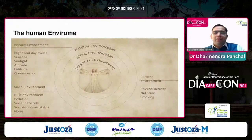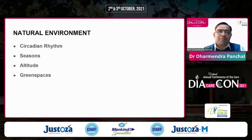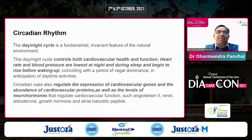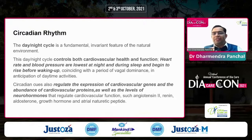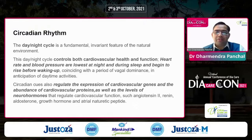These mechanisms may eventually lead to thrombosis, atherosclerosis, or alteration in cardiac structure, ending in ischemic events, arrhythmia, cardiomyopathy, or heart failure. The human environment can be divided into natural environment, social environment, and personal environment. In the natural environment we have circadian rhythm, season, altitude, and green spaces. Circadian rhythm — the day-night cycle — is a fundamental feature of the natural environment. It controls both cardiovascular health and function. Heart rate and blood pressure are lowest at night during sleep and begin to rise before we wake up.